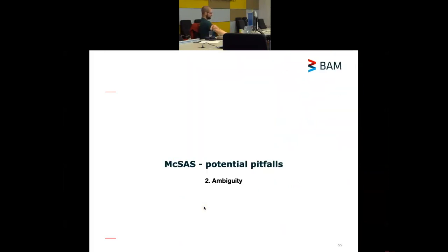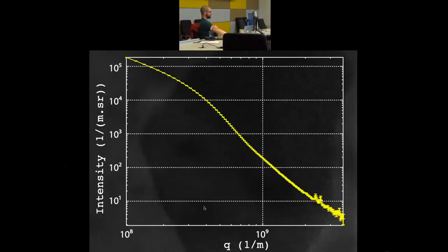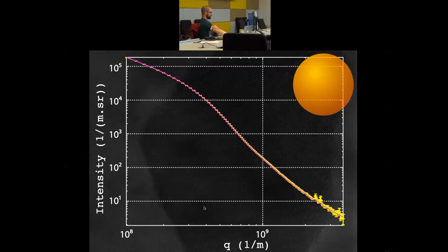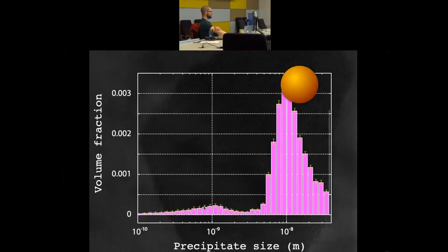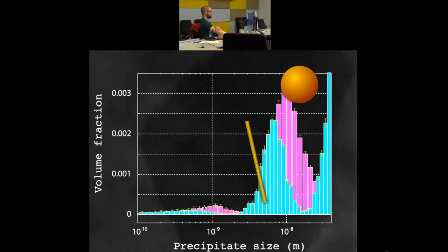Then there is ambiguity in the system. This is something that we explained on day one. I can fit this scattering pattern using spheres. And it fits perfectly well, and I get a particular size distribution out. However, this is from one of the magnesium zinc alloys that I showed earlier on. These are not spheres. These are actually cylinders. If I change my shape to cylinders, it fits perfectly well. The difference in result between these two is that if you fit with spheres, you get this distribution. And if you fit with cylinders, you get this distribution. But both of these are in principle valid solutions to your scattering pattern. So, this means that you need to provide information on the shape of your particles.